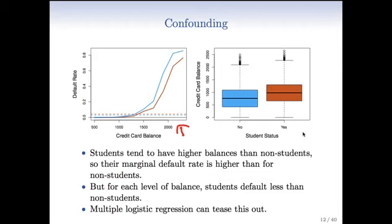Because balance plays a role, what we see in this plot is that for each level of balance, students default less than non-students. When you just look at student on its own, it's confounded with balance, and the strong effect of balance makes it look like students are worse defaulters. But this plot explains it all: for each level of credit card balance, if we look separately for students and non-students, students tend to have a lower default rate.